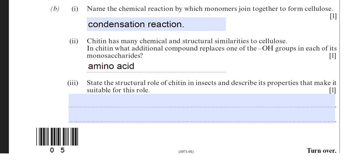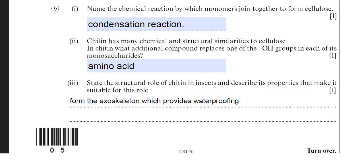The properties of that exoskeleton that makes it suitable in its role in insects is that it is very strong. It provides support for the insect. It's also a waterproof layer which prevents water loss. And it's also very light, because insects fly and the lighter they are the better. So I've added in that it forms the exoskeleton which provides waterproofing.